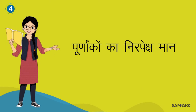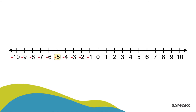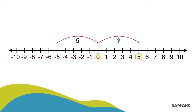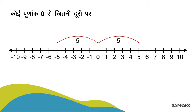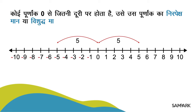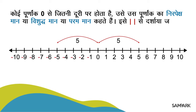पूनांकों का निर्पेक्ष मान। अच्छा, अब ये बताओ कि माइनस 5, 0 से कितनी दूरी पर है? 5 मात्रक की दूरी पर, ना? और 5 कितनी दूरी पर है? ये भी 5 मात्रक की दूरी पर। कोई पूनांक 0 से जितनी दूरी पर होता है उसे उस पूनांक का निर्पेक्ष मान या विशुद्ध मान या परमान कहते हैं। तो माइनस 5 का निर्पेक्ष मान हुआ 5, और 5 का भी निर्पेक्ष मान हुआ 5।